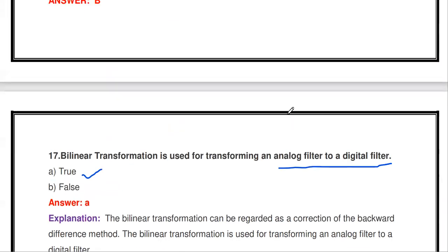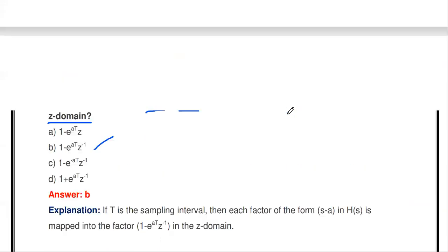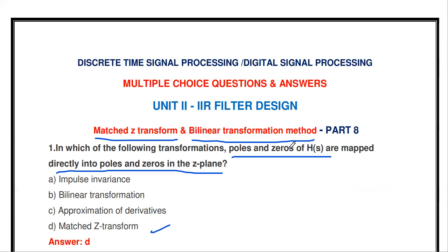These are some of the questions about the design of IIR digital filters using bilinear transformation and matched Z-transform methods. These are four design methods to convert an analog Butterworth or Chebyshev filter into a corresponding digital IIR filter. Thanks for watching. Links for remaining videos are in the description box. The DTSP and signals and system playlists are available in my channel. Please share this video with your friends. Thank you.